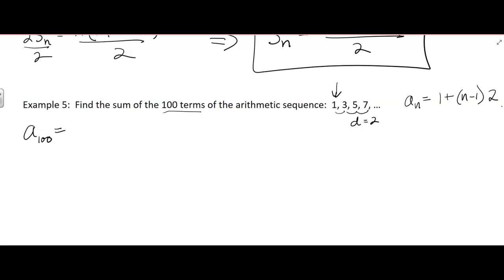So if I want to find a sub 100, that equals 1 plus (100 minus 1) times 2, which is 1 plus 99 times 2, which is 1 plus 198. And that's going to be 199. So that's the 100th term.